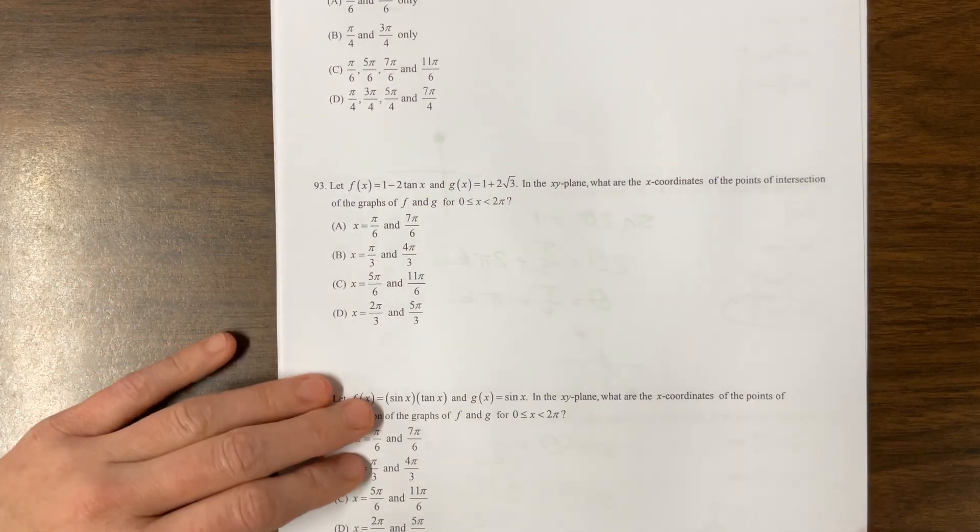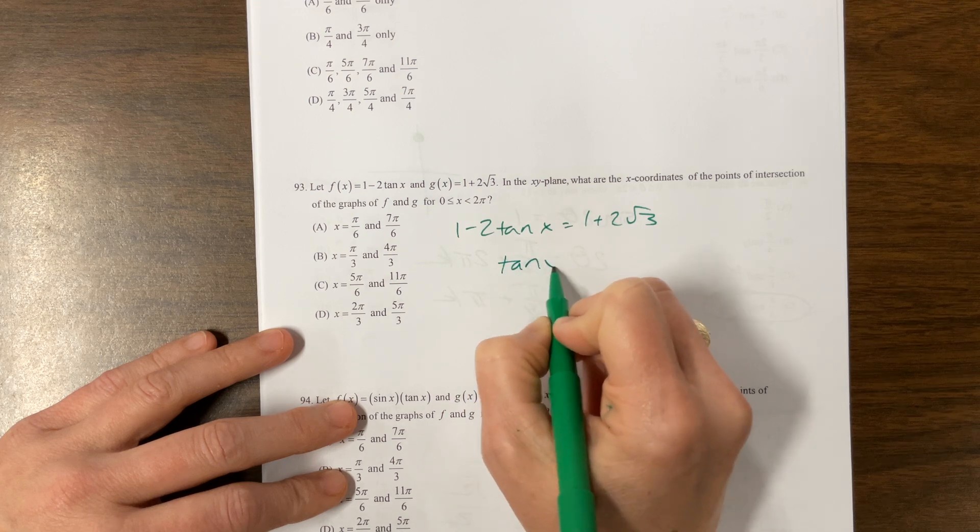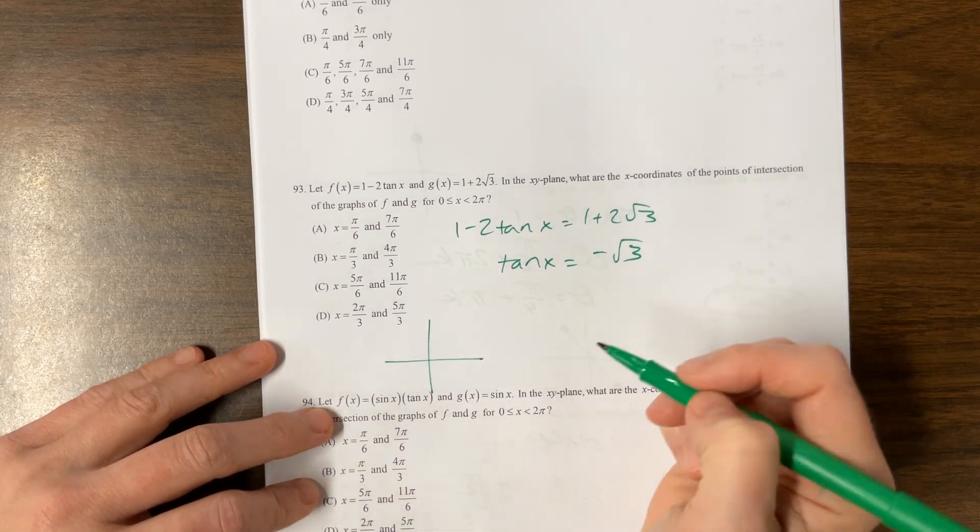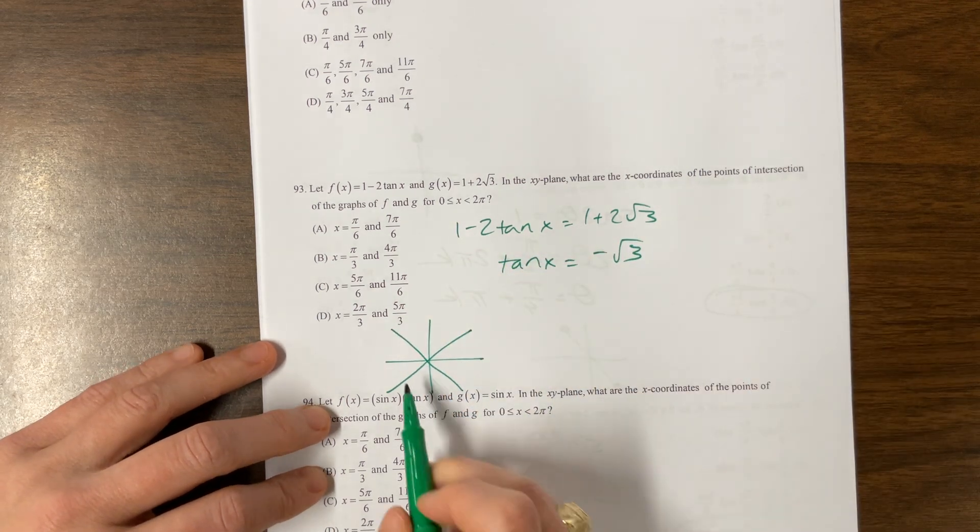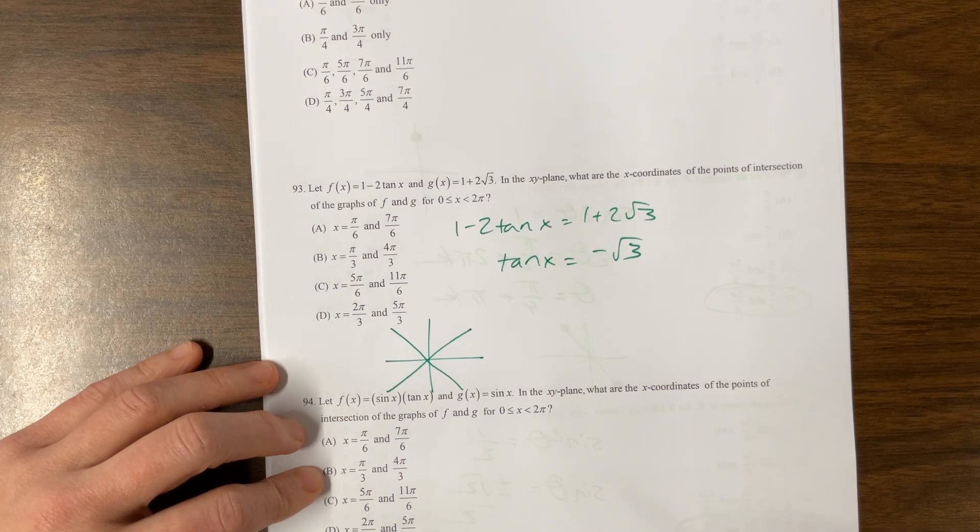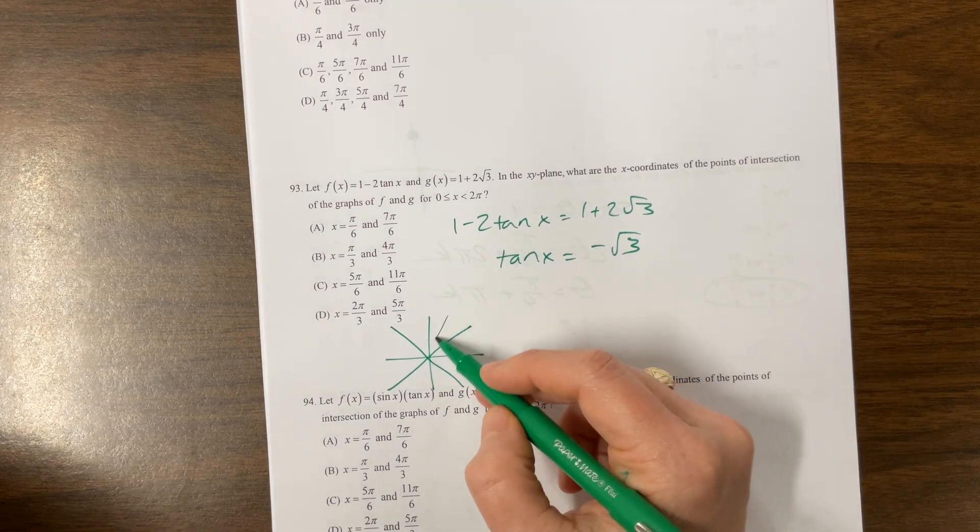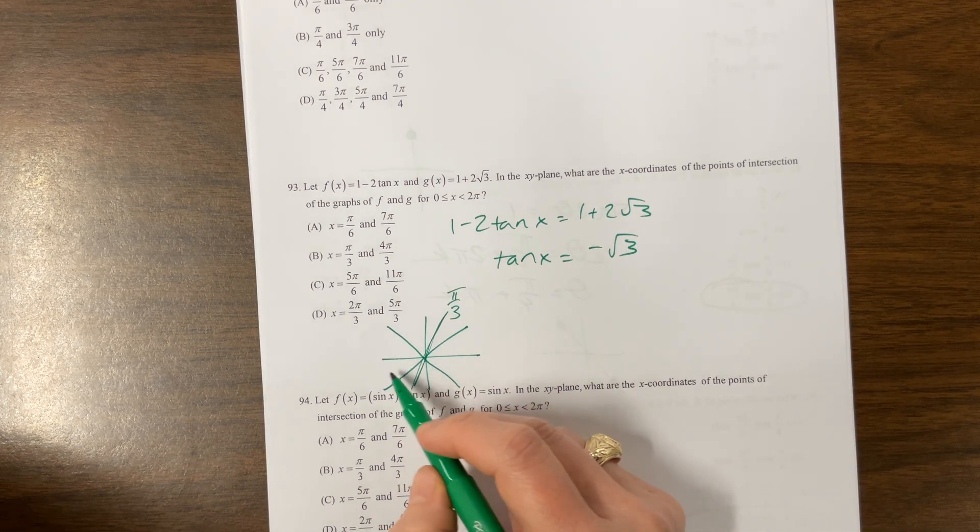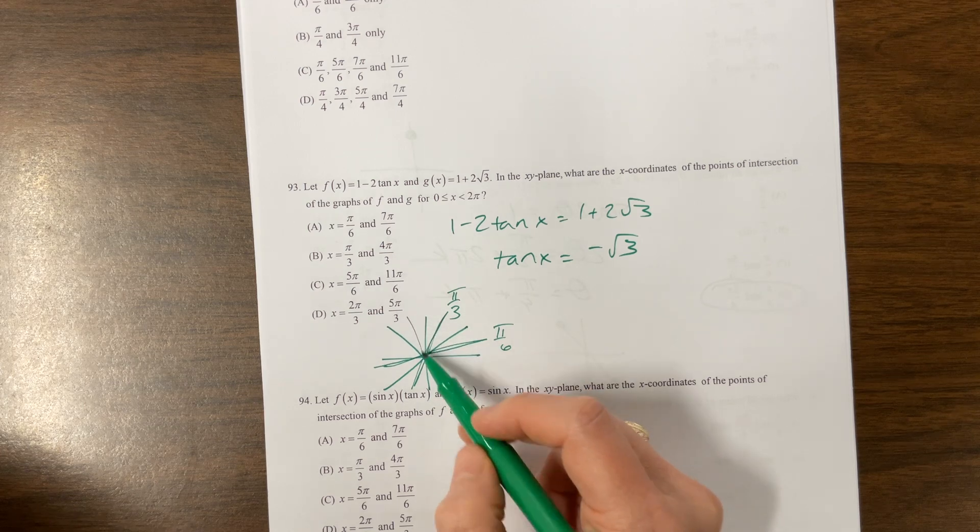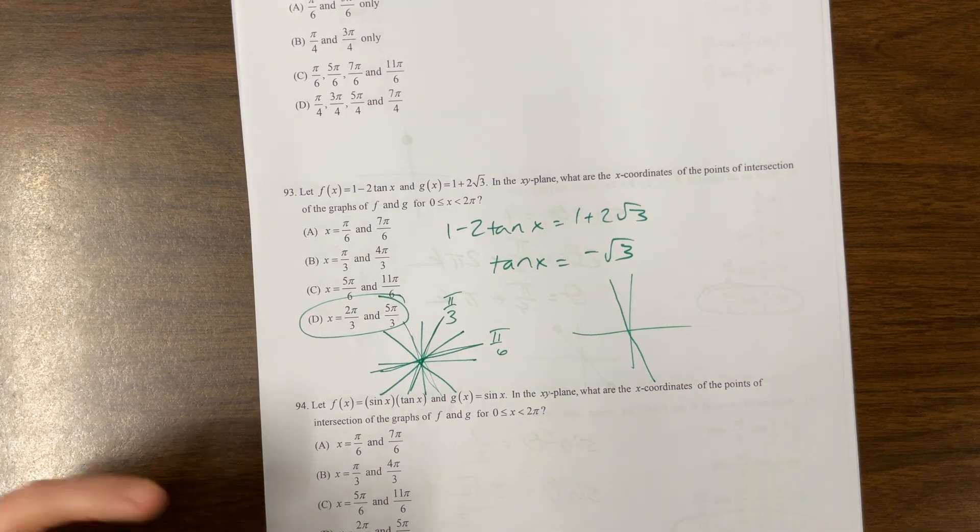So now we're going to set these two equal. 1 minus 2 tangent of x is equal to 1 plus 2 root 3. The ones cancel. I can divide by negative 2. So tangent of x is equal to negative root 3. And so tangent, I always think about slope. So my slope is 0. My slope is undefined. My slope is 1 and my slope is negative 1. That's 0 and pi. That's pi over 2 and 3 pi over 2. This is the pi over 4 family that I've drawn in. And so the only thing that's tricky is my other two slopes to think about are root 3 and then root 3 over 3. So what is more steep? Root 3 is more steep. So root 3 is the pi over 3 family. Since this is, and then the less steep one, is the pi over 6. But this is negative. So we're looking at 2 pi over 3 and 5 pi over 3 right there. This is what we wanted. These two right there-ish. That's badly drawn anyway.